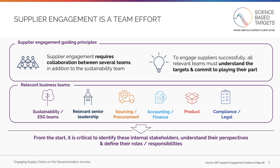Supplier engagement is a team effort requiring collaboration between several teams in addition to the sustainability team. To engage suppliers successfully, it is critical for all relevant teams to understand the targets and commit to playing their part. The stakeholders needed for supplier engagement will depend on your company's structure. You should consider the relationships, information, and skills required to effectively engage suppliers and determine which teams need to be involved.